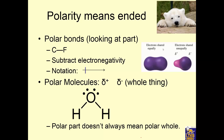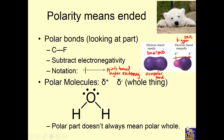So what does polarity mean? It means ended. We looked at polar bonds — polar bonds are between atoms, and what you do is you subtract the electronegativity of the two atoms. If the electronegativity difference is small, then you get an equal sharing of electrons, which is nonpolar. But the bigger the electronegativity difference, one atom that's more electronegative pulls the electrons towards its side of the bond, and you get what's called a dipole bond. So we draw an arrow that points towards higher electronegativity. That describes bonds.